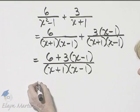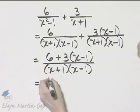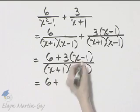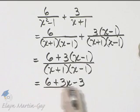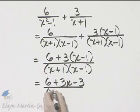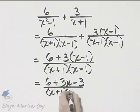I will simplify in the numerator. So that's 6 plus, use the distributive property, that's 3x minus 3, all over that denominator x plus 1 times x minus 1.